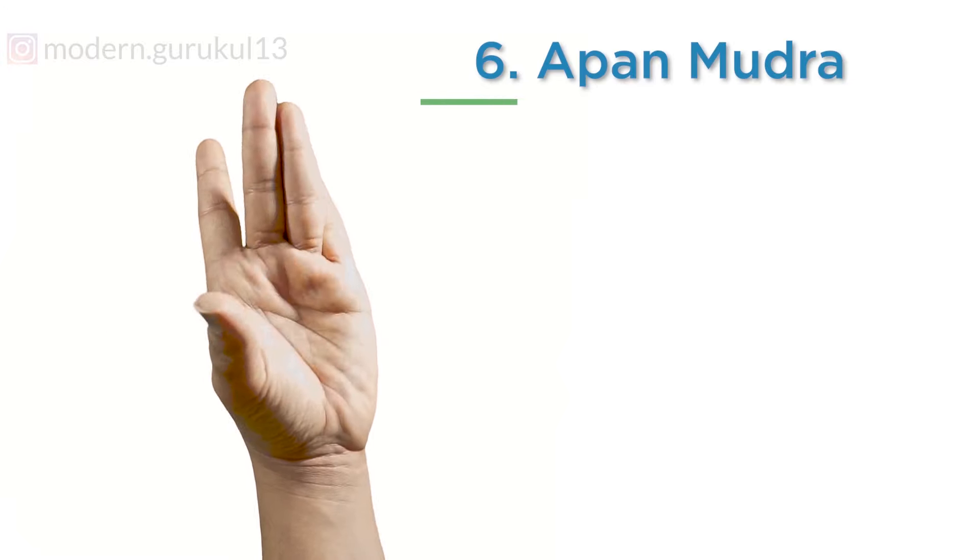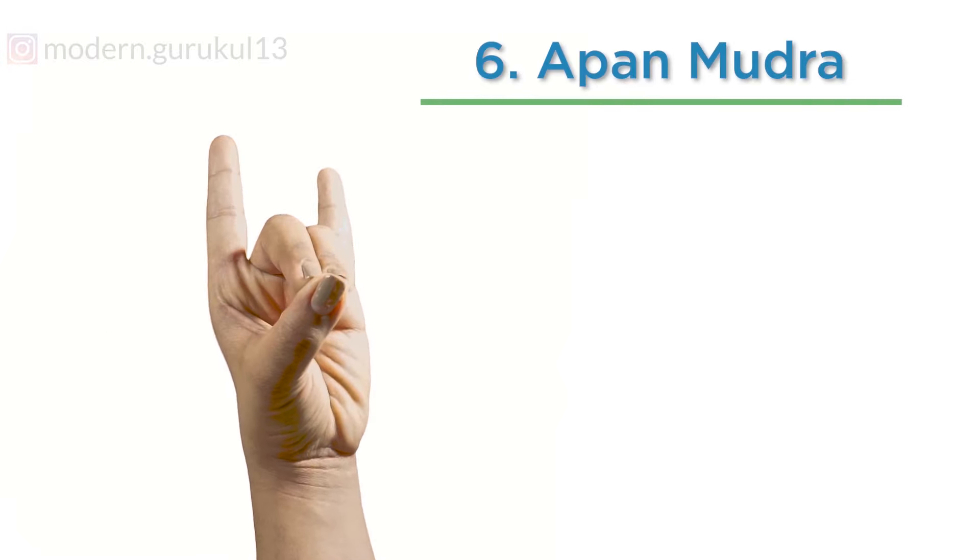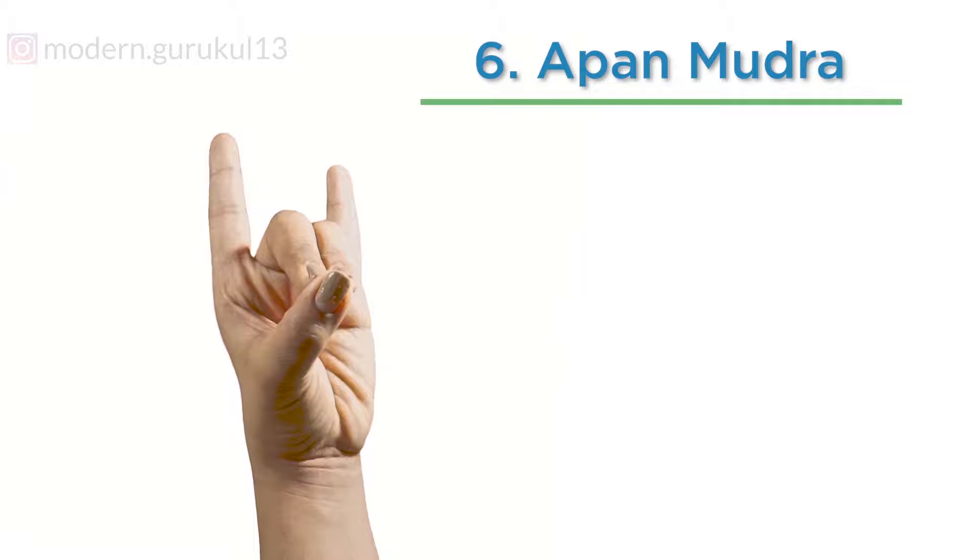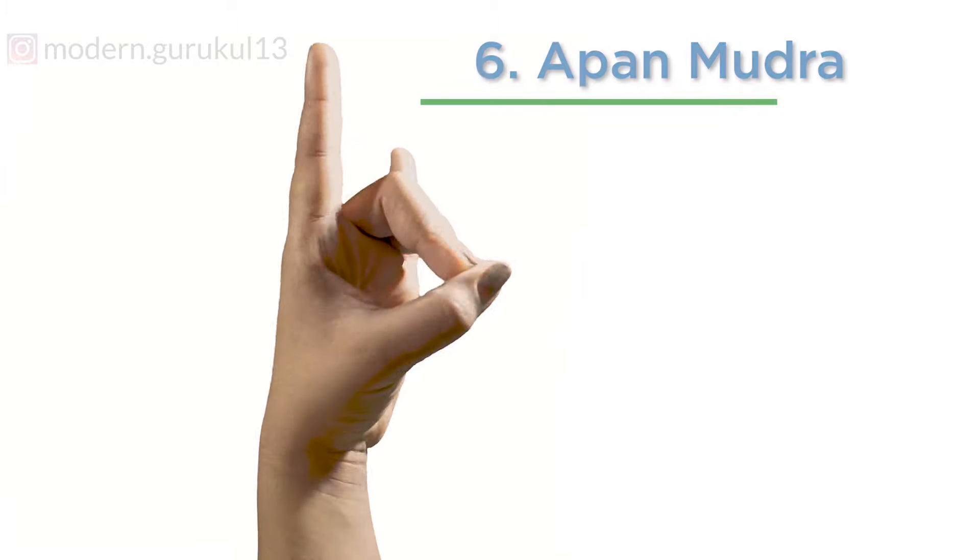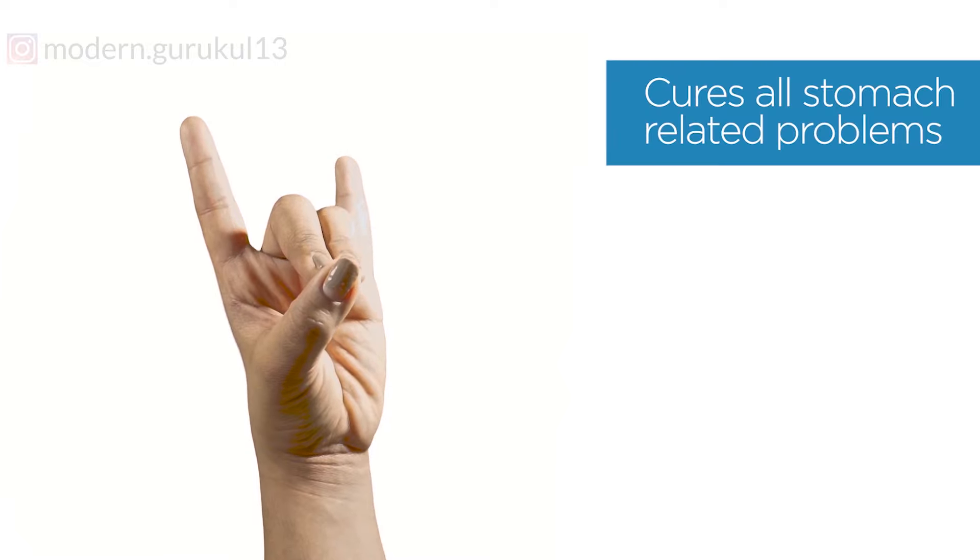Apan Mudra: The tip of the middle finger and ring finger touches the tip of the thumb. The other two fingers are pointing outwards. Apan Mudra cures stomach related problems, mainly constipation.